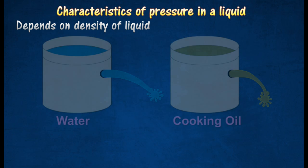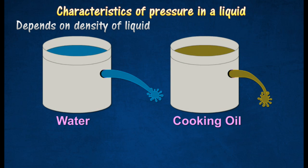A hole is made at the same height on the side of each of two similar tins. One is filled with water while the other is filled with cooking oil.